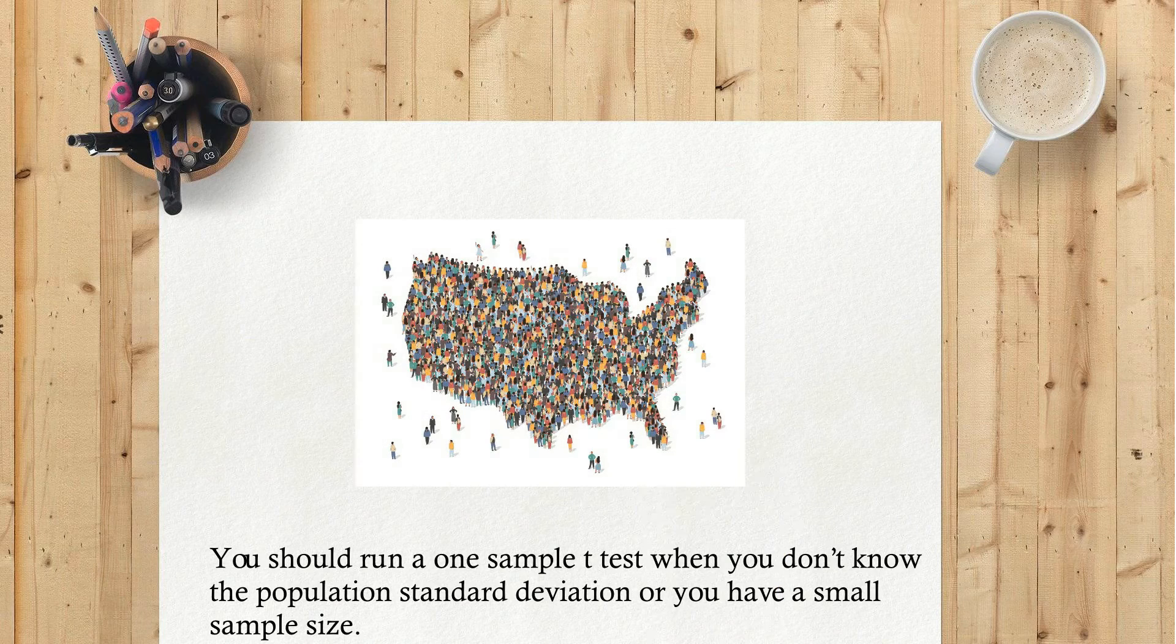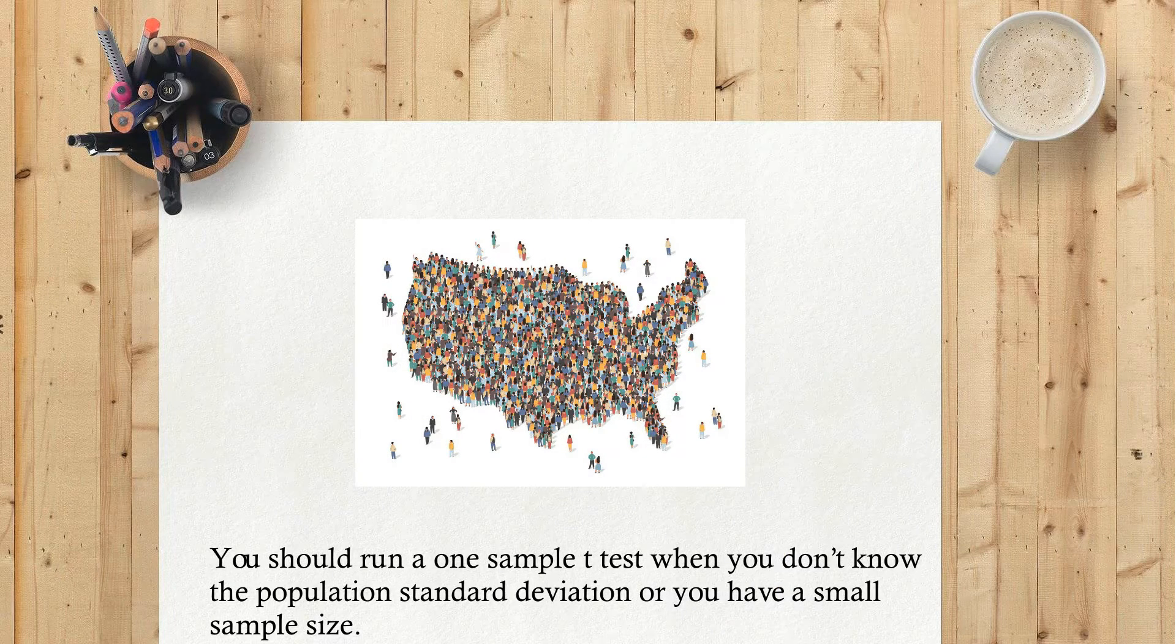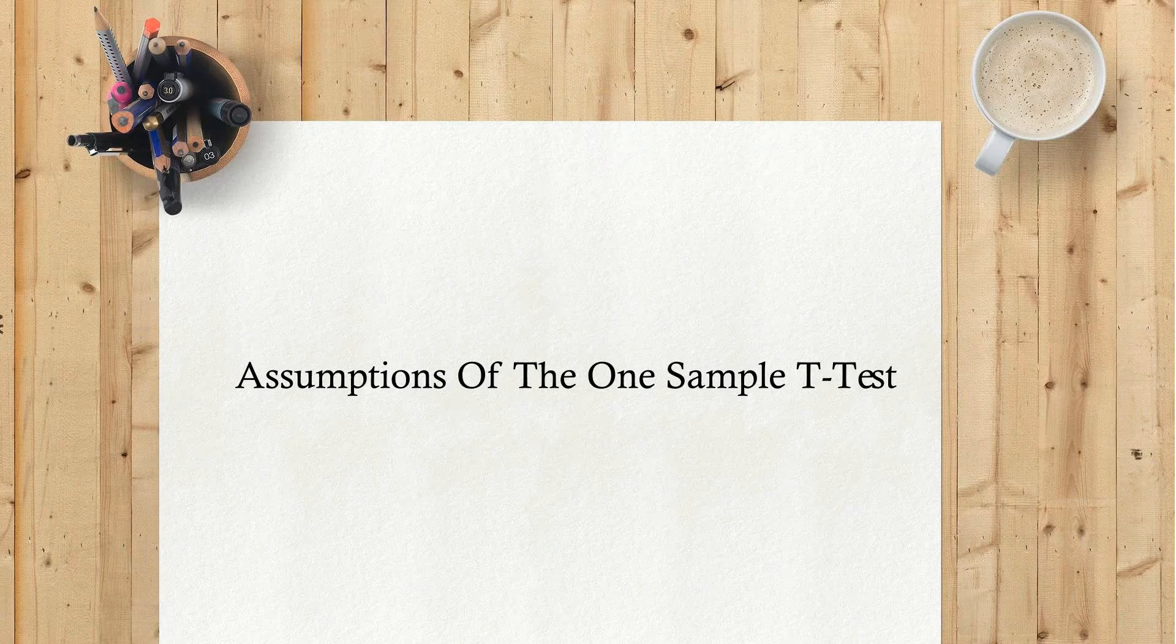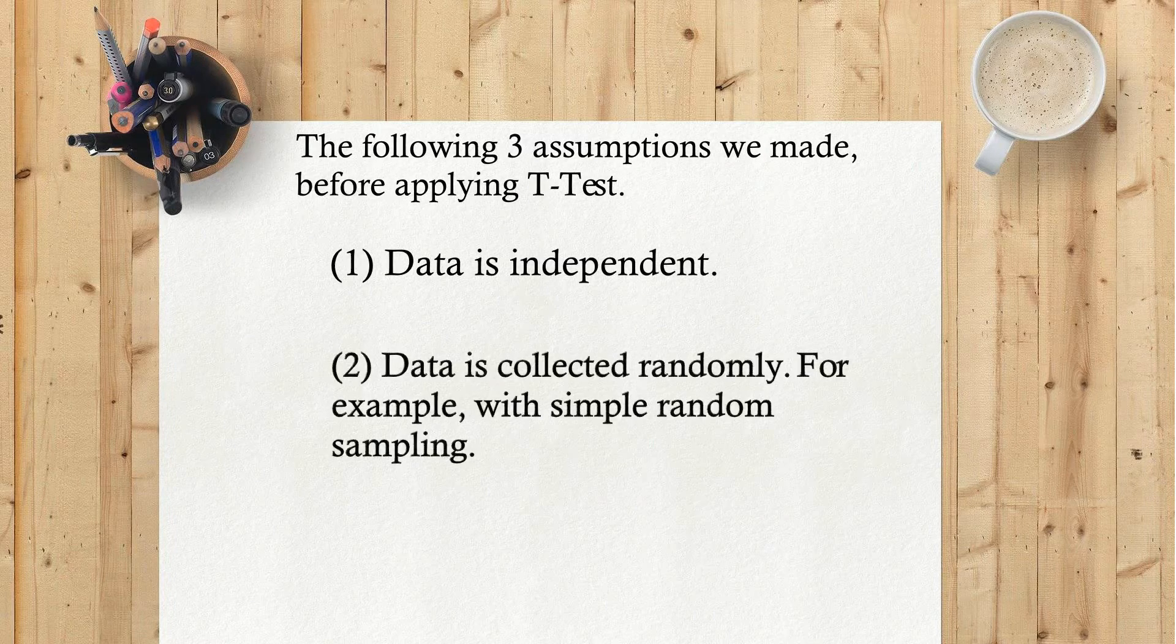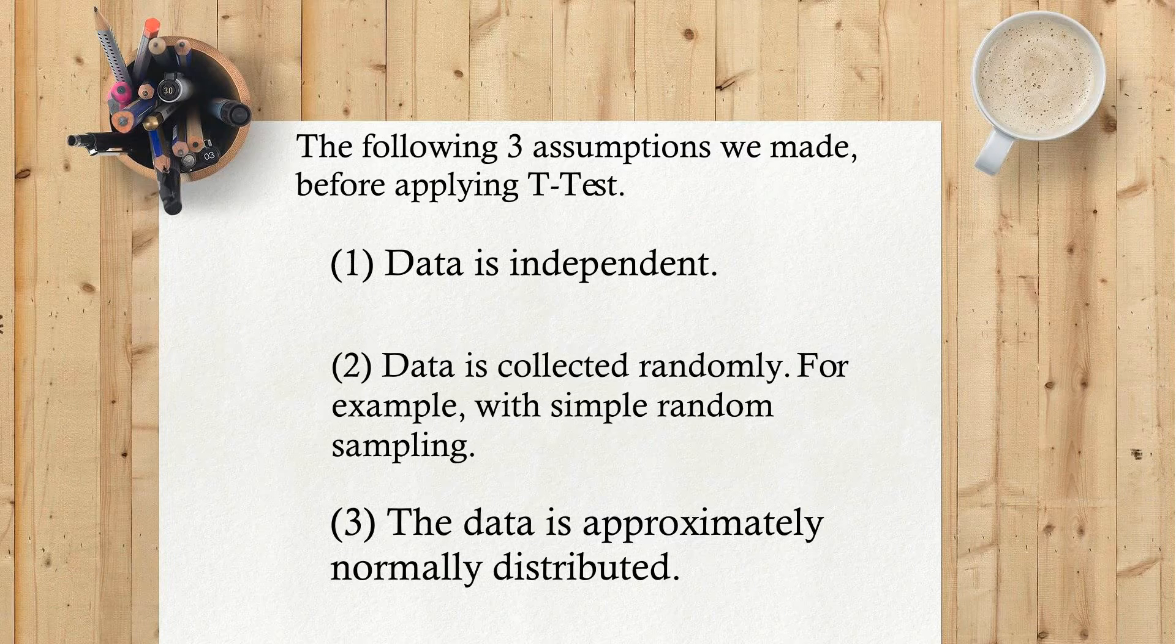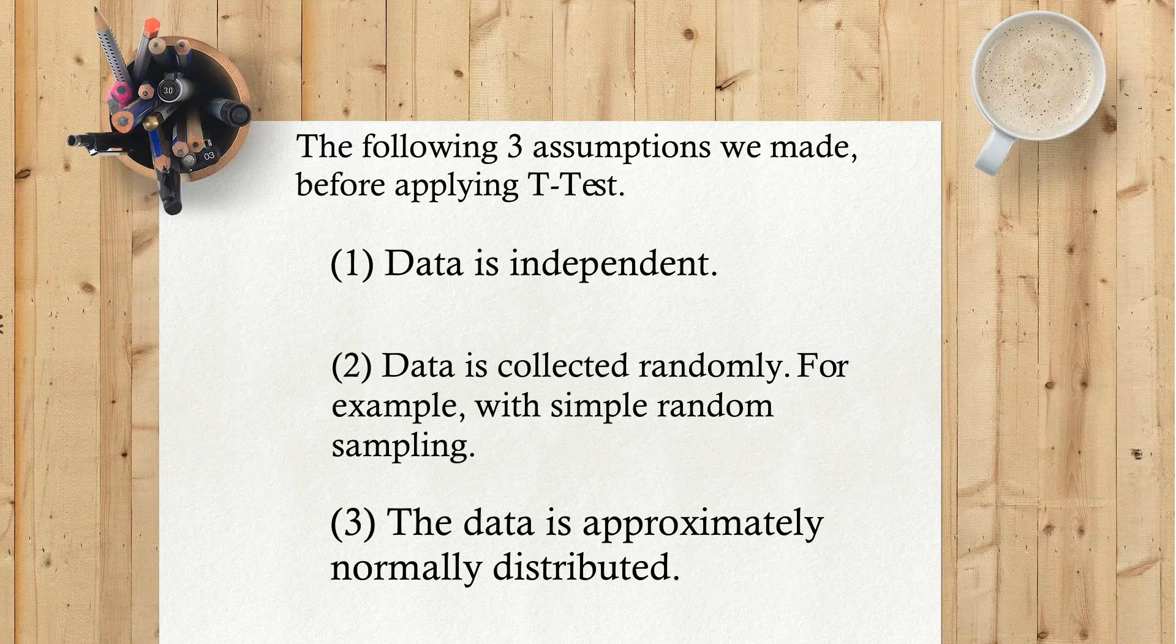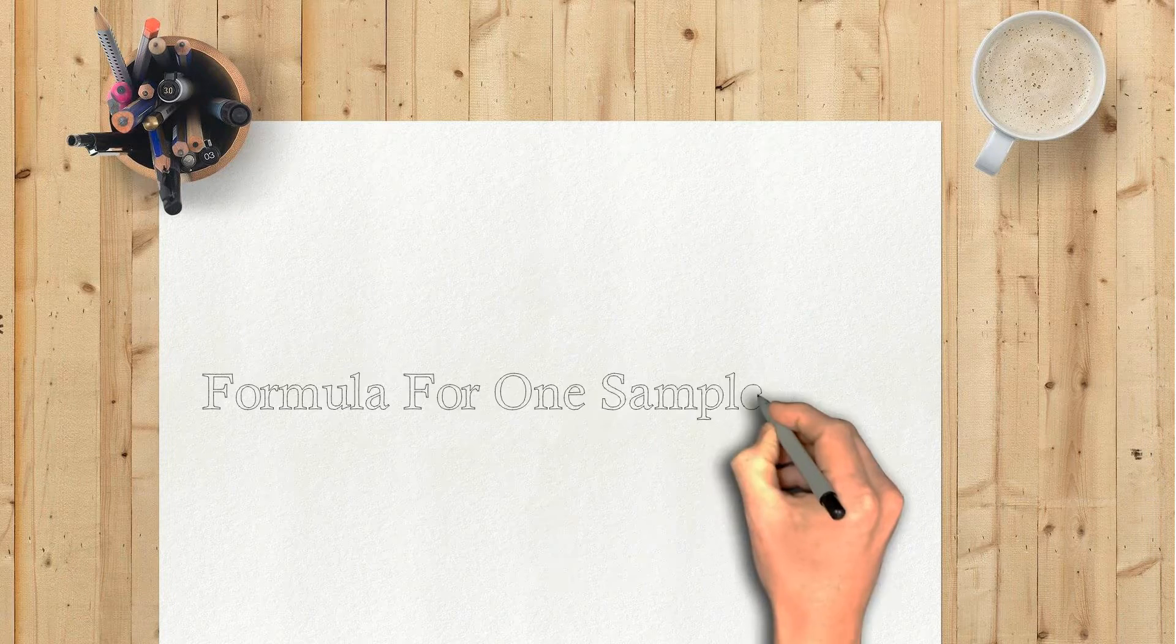You should run a one sample t-test when you don't know the population standard deviation or you have a small sample size. Assumptions of the one sample t-test: the following three assumptions we made before applying t-test. 1) Data is independent. 2) Data is collected randomly, for example with simple random sampling. 3) The data is approximately normally distributed.